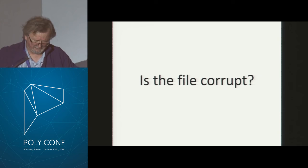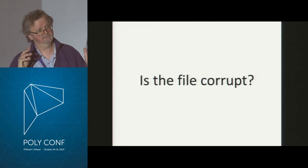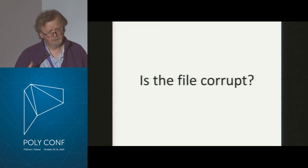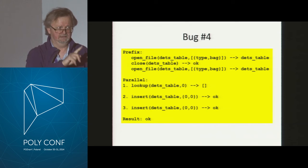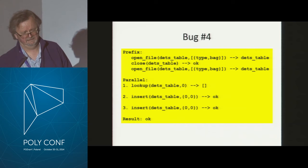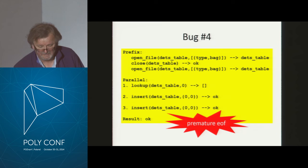I asked the guy at Ericsson how I could tell if the file is corrupt, and he gave me one line of code to test that. I added it to my test code and ran more tests. This time I had to run for five to ten minutes, and I found a new failure. In this test case, before going parallel, we open the file, close it, open it again. Then we do three things in parallel: two insertions and a lookup. Everything returned values consistent with my model — but when I checked for corruption, I got premature end of file.